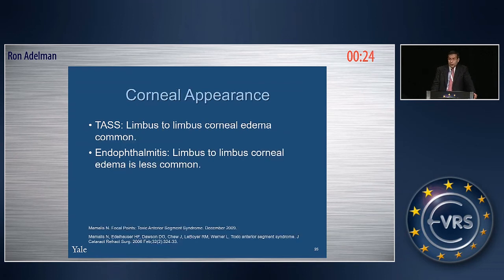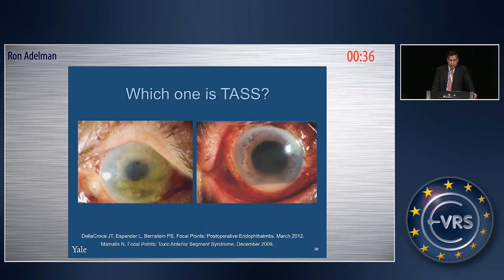Corneal appearance is also helpful. TASS produces limbus-to-limbus corneal edema, whereas in earlier-phase endophthalmitis, limbus-to-limbus edema is rare. When comparing two images, it is not always an easy distinction, but the presence of limbus-to-limbus edema increases the likelihood of TASS.